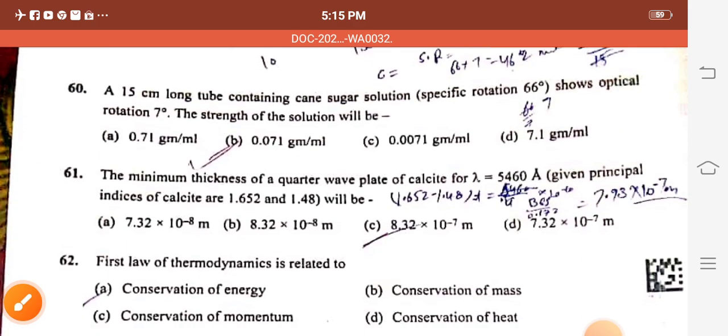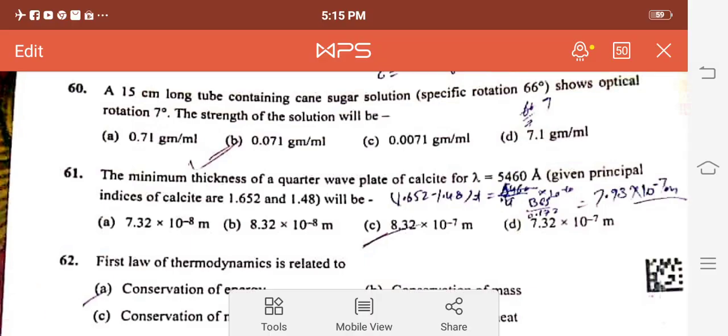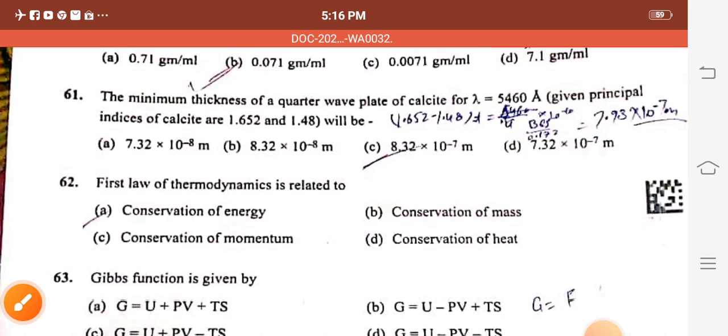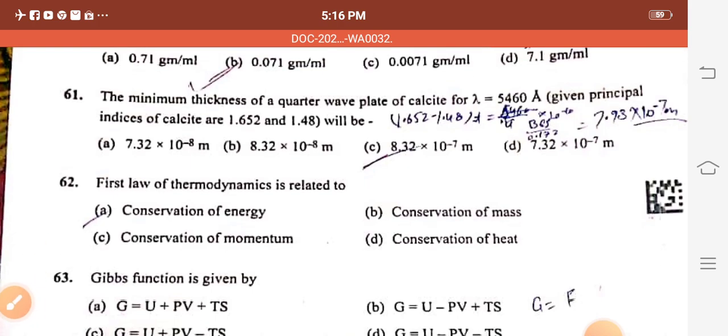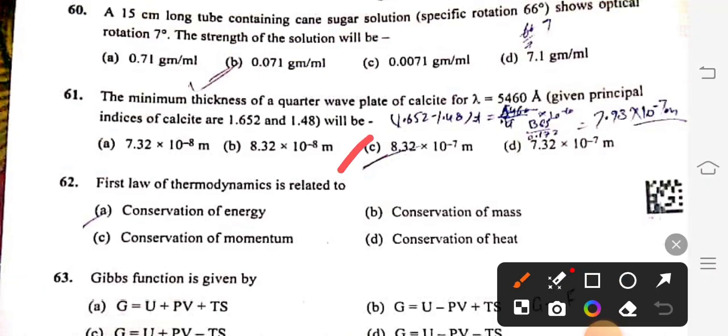Question 60: A 15 centimeter long tube containing cane sugar solution, specific rotation 66 degree, shows optical rotation 7 degree. The strength of the solution will be 0.071 gram per milliliter, option B. Question 61: The minimum thickness of a quarter wave plate of calcite for lambda 5460 angstrom, where refractive indices are given 1.652 and 1.48, will be 8.32 into 10 to the power minus 7 meter, option C.